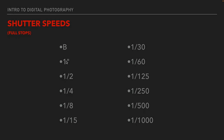Starting at one second, if we stop down one stop it goes to a half a second — half as much time, half as much light. Stop down again and it goes to a quarter, another stop to an eighth. Here's that truncation error again: when we go from an eighth, it goes to a fifteenth — it's just the way it works. These are the full stop shutter speeds: fifteenth to a thirtieth, thirtieth to a sixtieth, sixtieth to a one-twenty-fifth. That truncation error has now worked itself out and we're back on track.